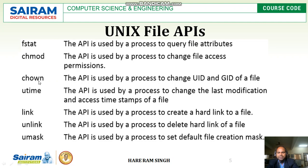Next is chown, the change owner API. This API is used by a process to change the user ID and group ID of a file. As we know, every file has a user ID and group ID, so if you want to change them, we can use the chown API. Then, utime — this API is used by a process to change the last modification and access time of a file.